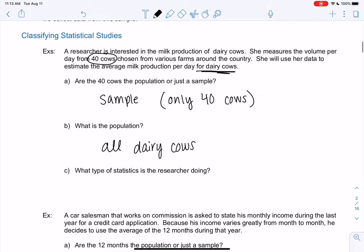And so since we're making a conclusion about a bigger group, the type of statistics would be inferential.